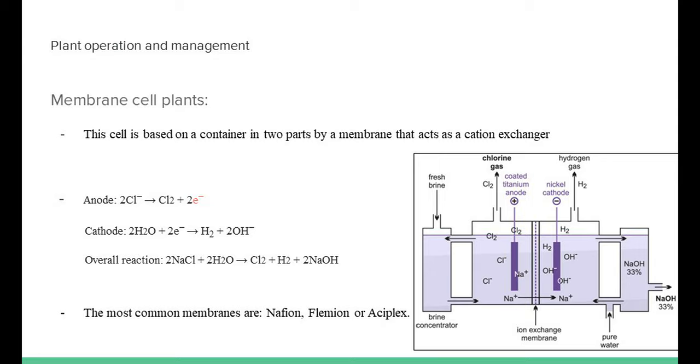One of them abandons the cell as a byproduct, and the other part crosses the membrane that acts as a cation exchanger to react and form caustic soda. Then, gaseous chlorine and hydrogen abandon the cell from each of its parts and are collected afterwards.